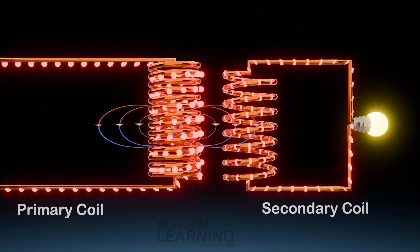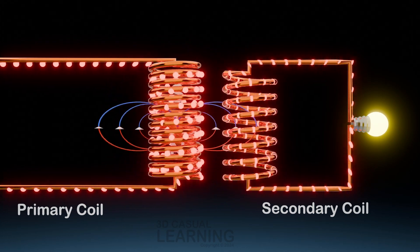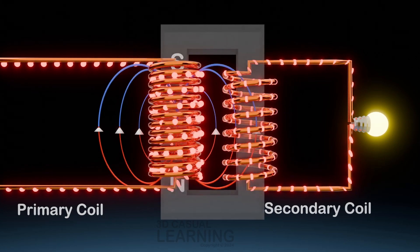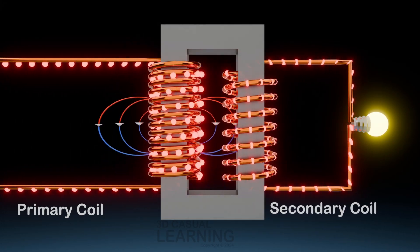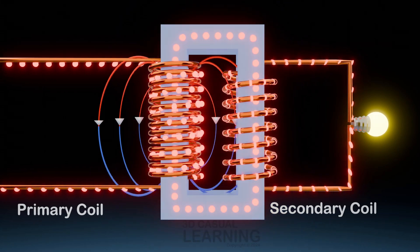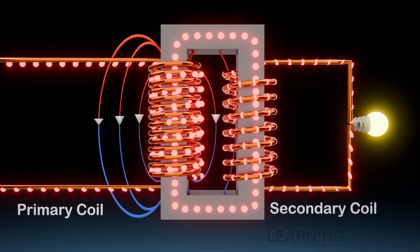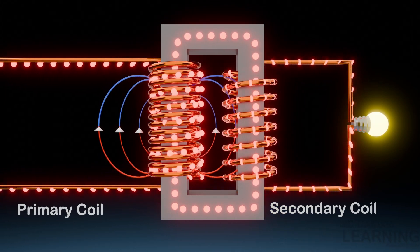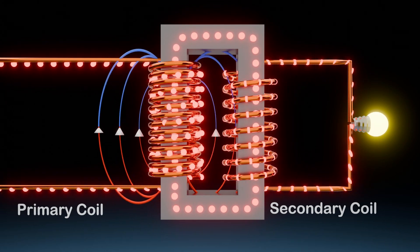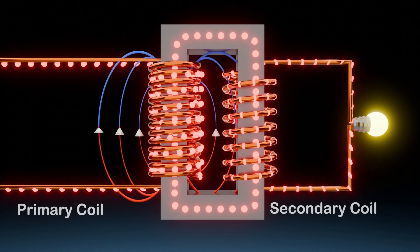However, this setup is not efficient as a lot of the magnetic field from the primary coil is wasted because of the gap. To overcome this problem, a metal plate is used as a core. It's typically made of laminated steel sheets stacked together, known as yoke and limbs. This core helps concentrate the magnetic field generated by the coils, making the transformer work efficiently.